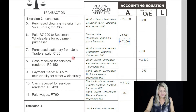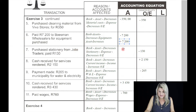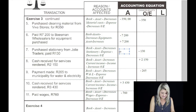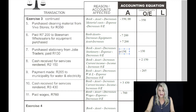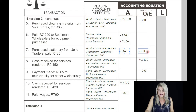On the seventh: purchase stationery from Jolie Traders, paid 130 Rand. It's bank and stationery. Bank is an asset — it's decreasing by 130 Rand because we're paying for something. The other account is stationery, which is an expense, and an expense always has a negative effect on owner's equity — so it's minus 130 Rand.